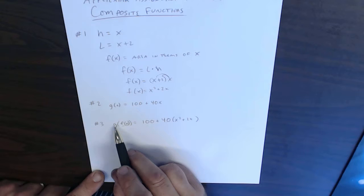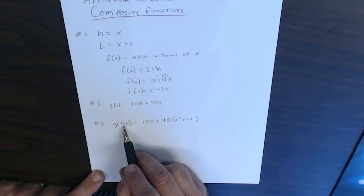So, g of f of x means I'm taking the f of x function and I'm plugging that in for the x into the g of x function.